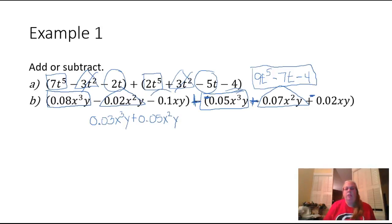And then my third term is negative 0.1 xy. And down here, its like term is right here, which is negative 0.02 xy. So I have negative 0.1 plus negative 0.2.